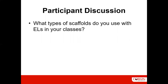Our guiding question: what types of scaffolds do you use with English learners? Some of you are saying sentence stems, sentence starters, word banks, graphic organizers, modeling, realia, lists, front-loading instruction, using the home language, anchor charts, images, emotional scaffolding, acting, mind maps. Keep them coming — we're going to advance to the next slide and my colleague Sidney Snyder will continue.